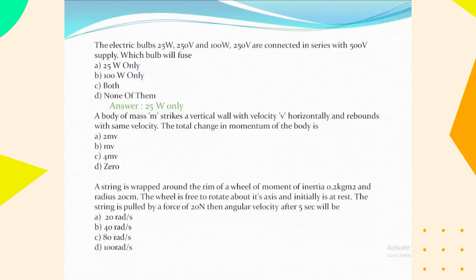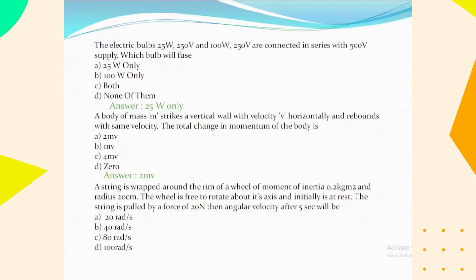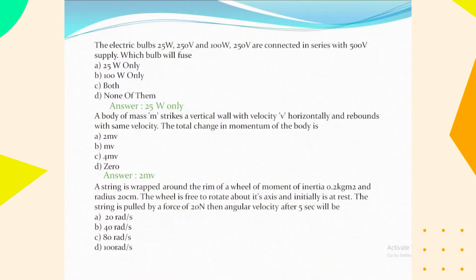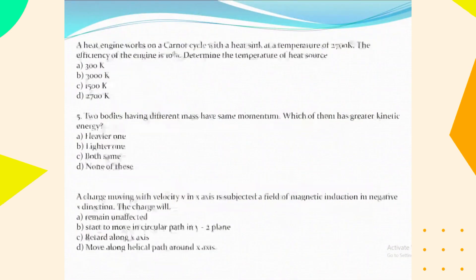A body of mass m strikes a vertical wall with velocity v and rebounds with the same velocity. The total change in momentum of the body is 2mV. A string is wrapped around the rim of a wheel of moment of inertia 0.2 kg·m² and radius 20 cm. The wheel is free to rotate about its axis and is initially at rest. The string is pulled by a force of 20 N; the angular velocity after 5 seconds will be 100 radians per second.